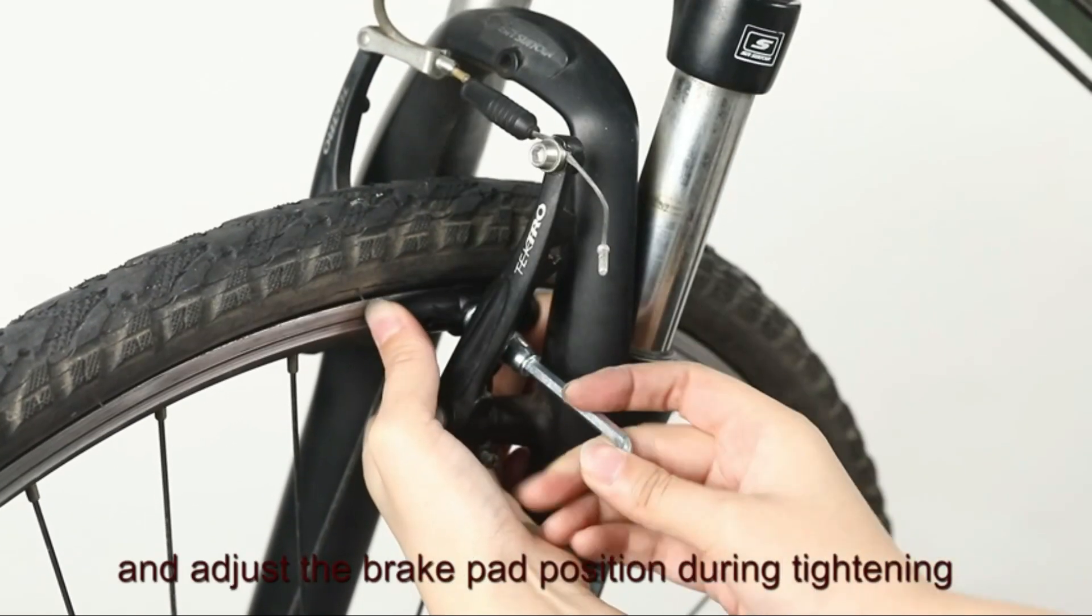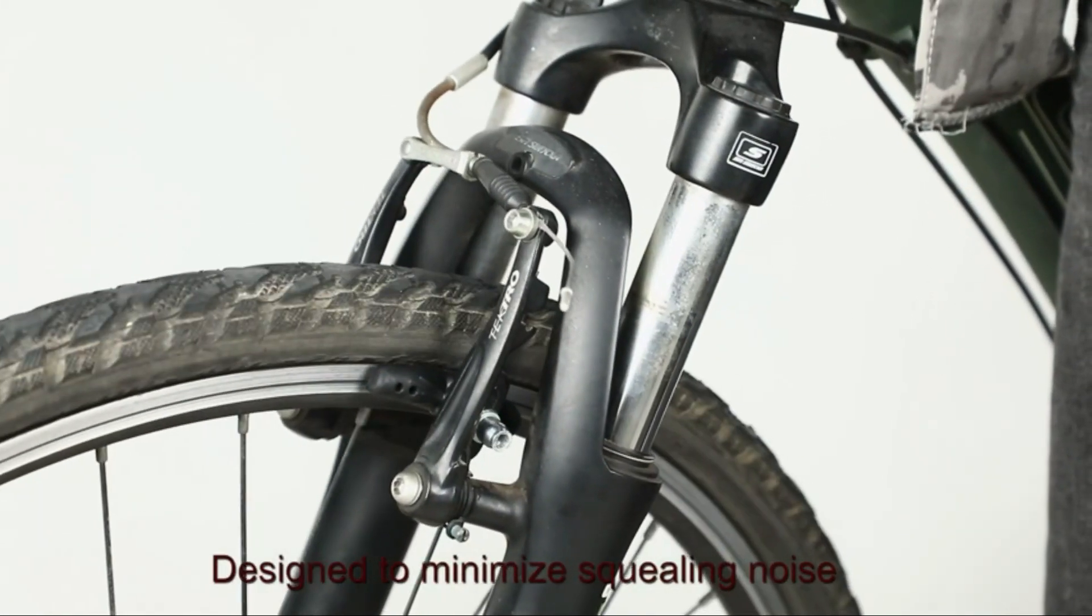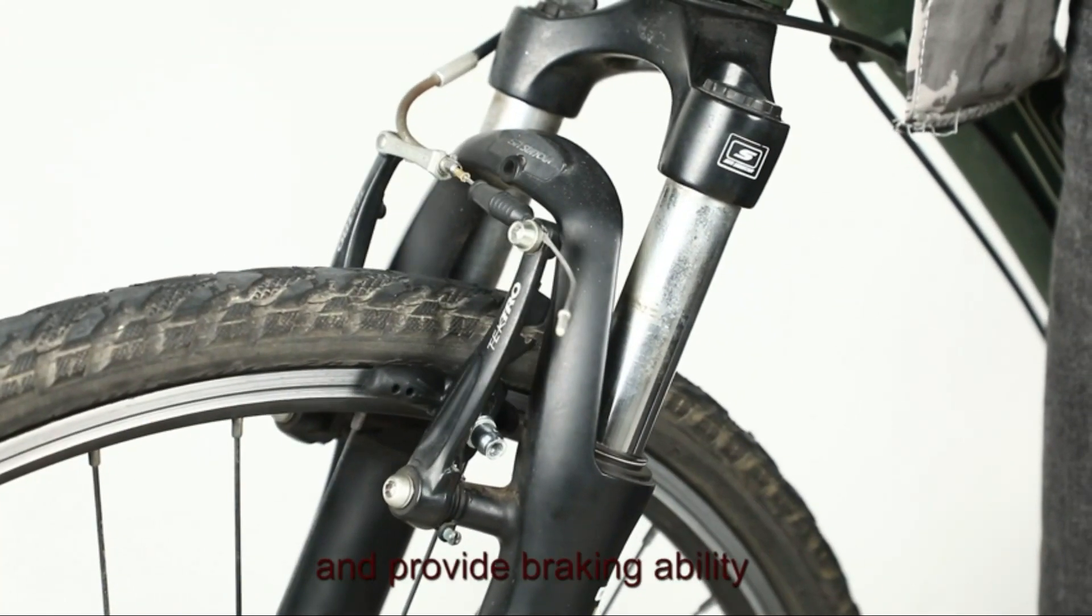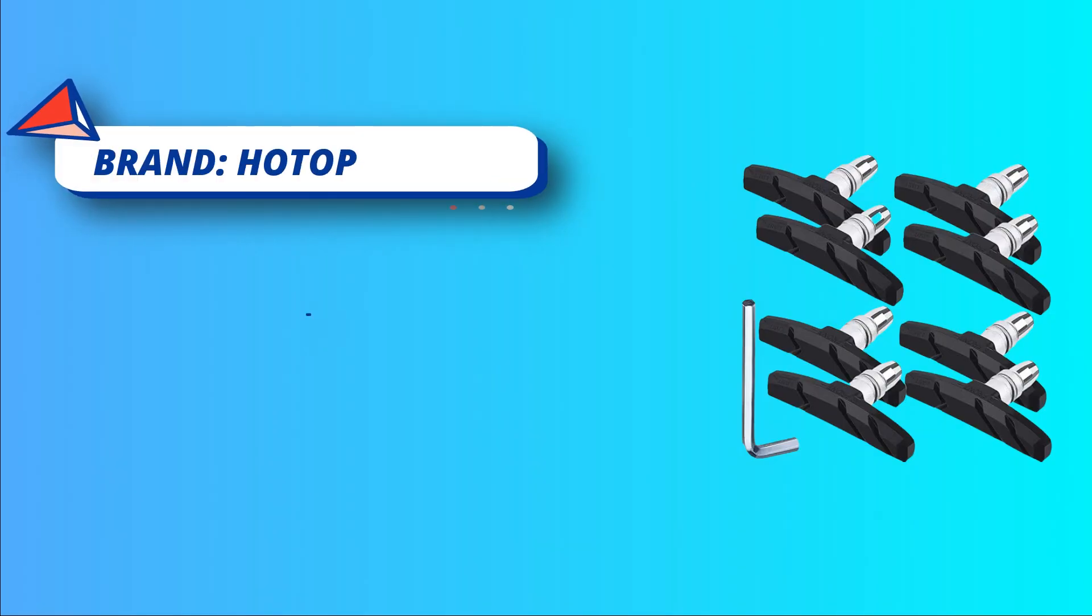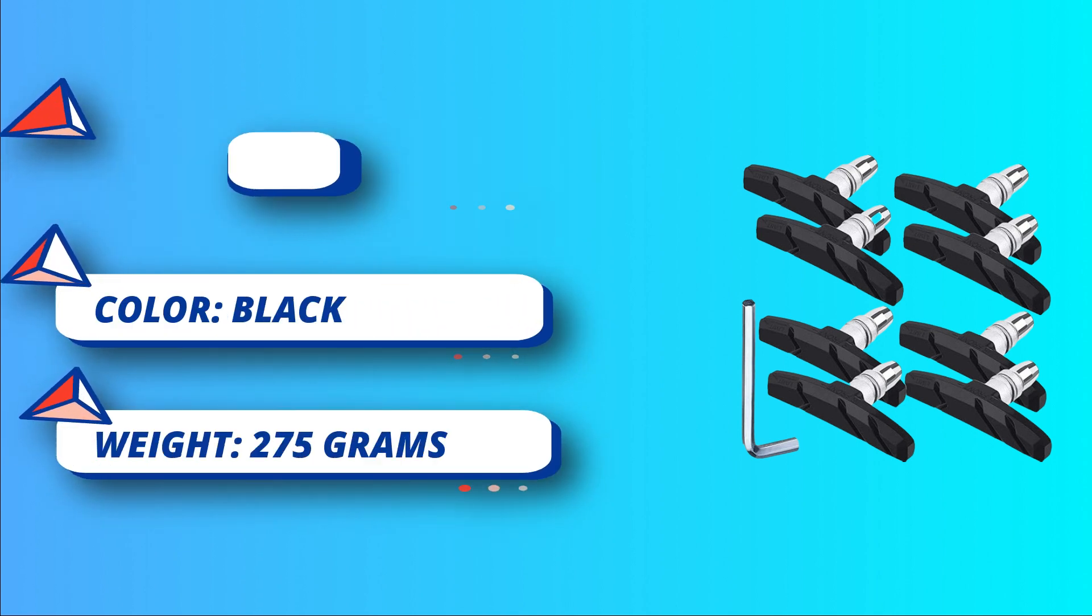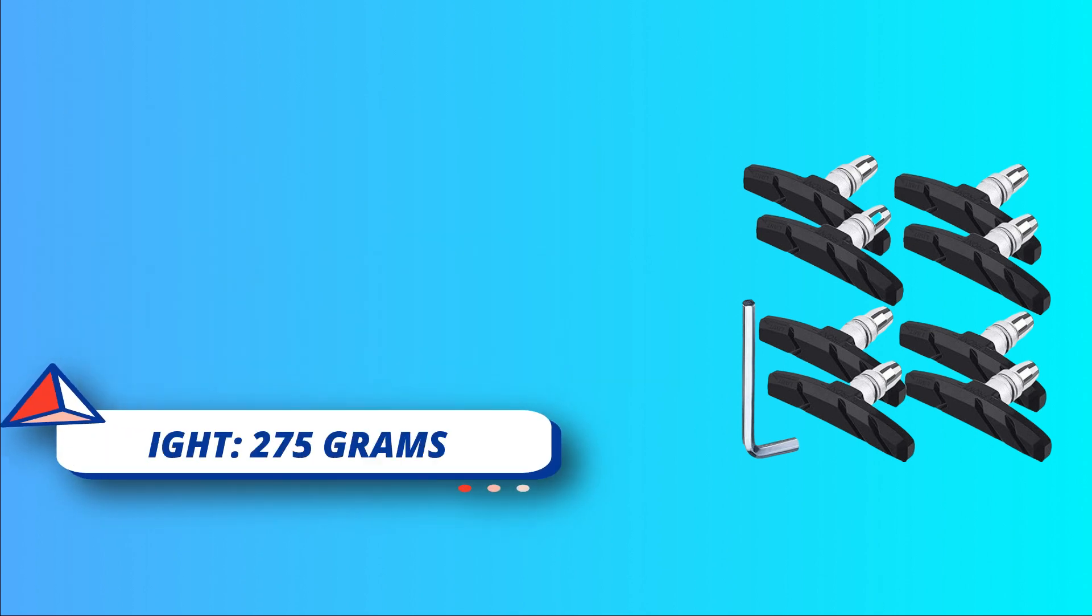Brake pad size: 70mm (2.76 inch) in length, 10-14mm (0.39 to 0.55 inch) in width and 38mm (1.50 inch) in height.